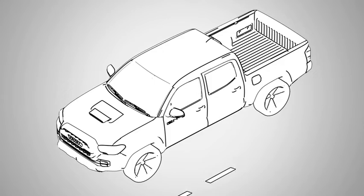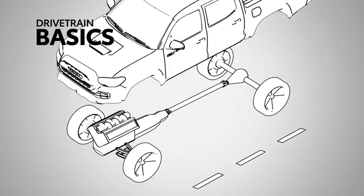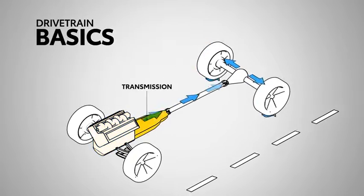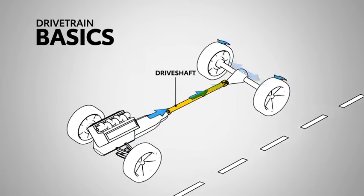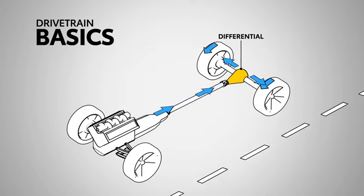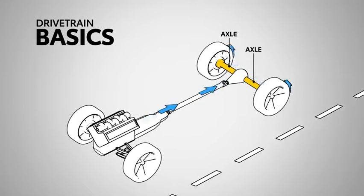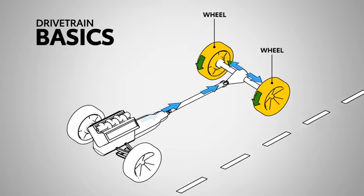To really understand four-wheel drive, we need to understand the limitations of two-wheel drive. With two-wheel drive, the power flows from the engine to the transmission and then out through the drive shaft to the differential gear, which is responsible for splitting the power out to the left and right wheels.